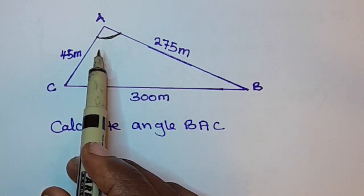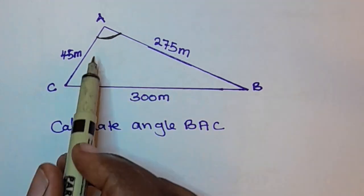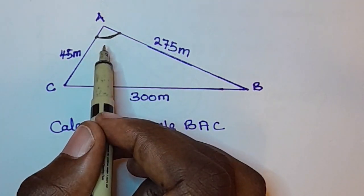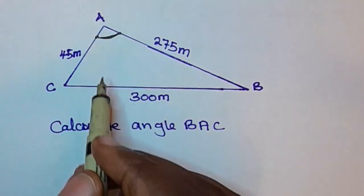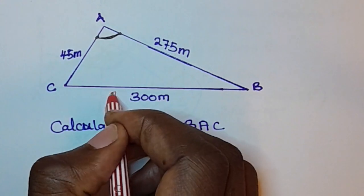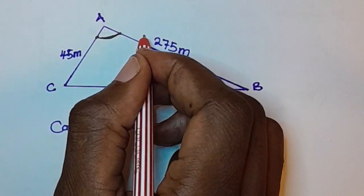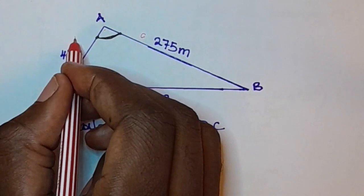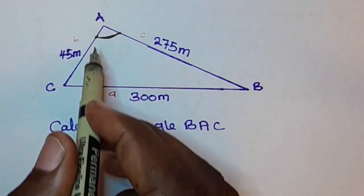To calculate an angle when you are given three sides of a triangle, we are going to use the cosine rule — the cosine rule that has been rearranged. We label the sides: the side opposite angle A gets small letter a, and similarly small letters b and c for the other sides.